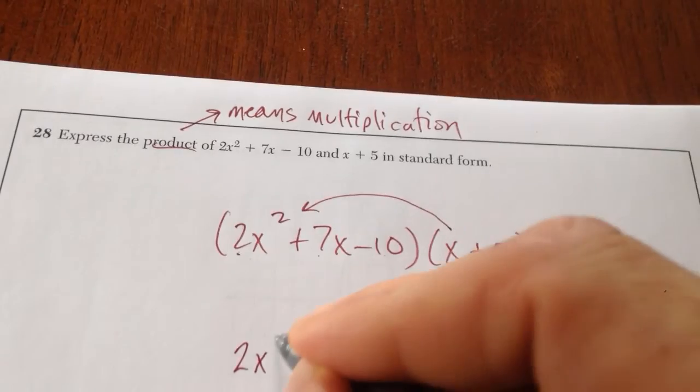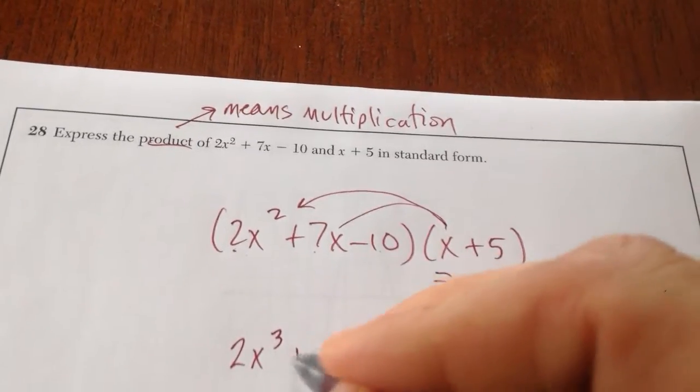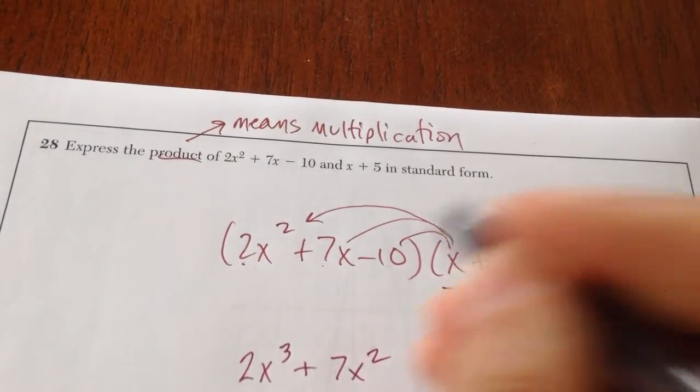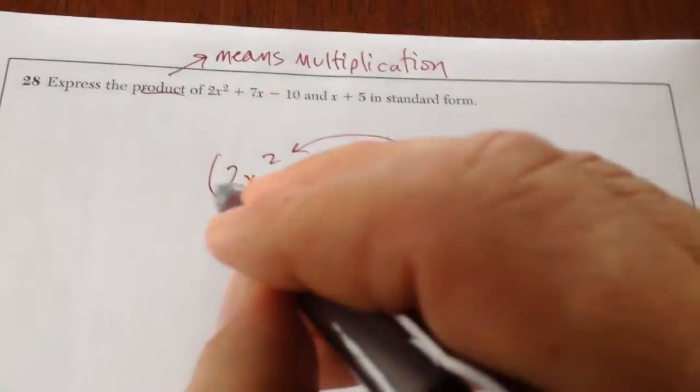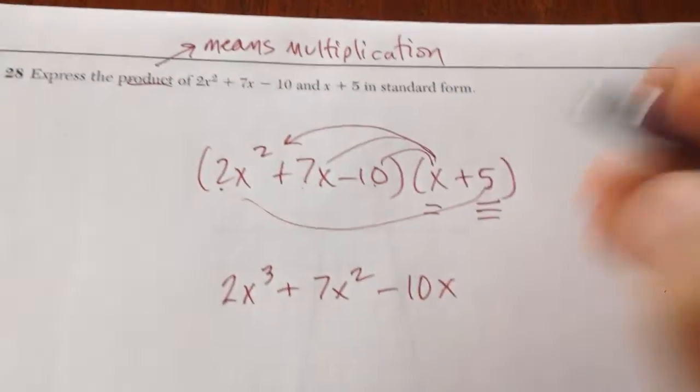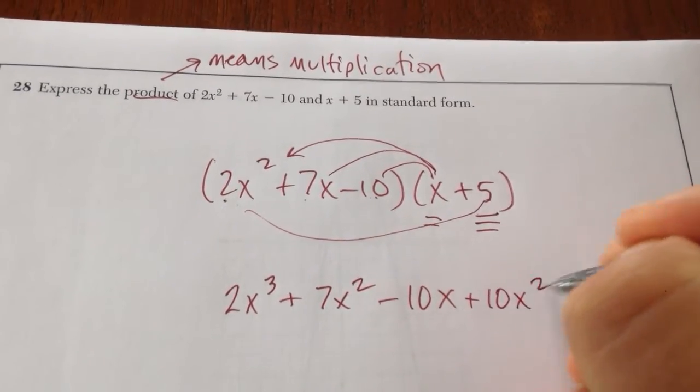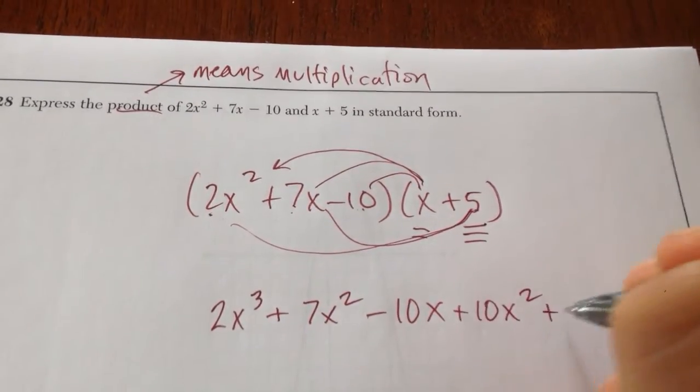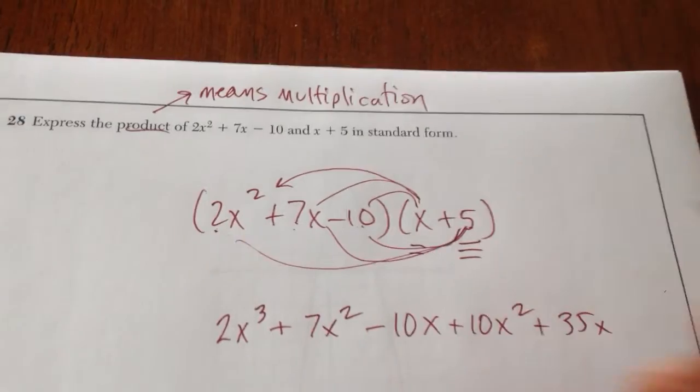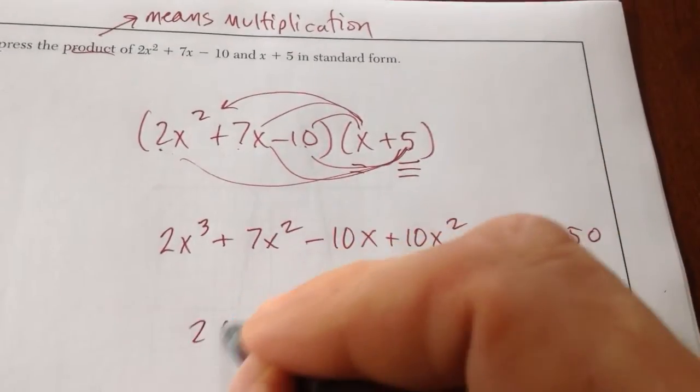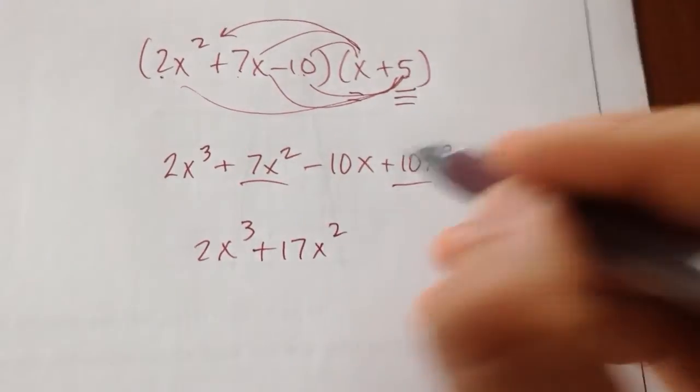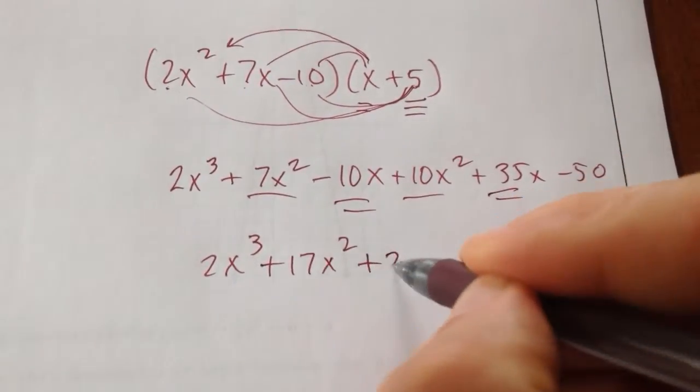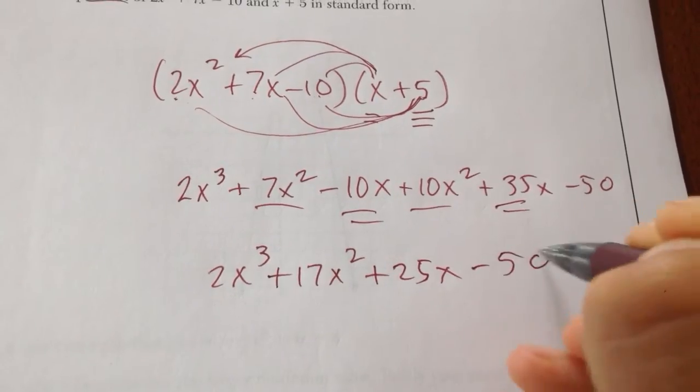2x squared times x is 2x to the third. x times 7x is going to be plus 7x squared. And then here you're going to get minus 10x. Now I have to multiply 5 times everything. 5 times here I get plus 10x squared. Here I get plus 35x. And then here I'm going to get minus 50. Now I'm going to combine like terms. 7x squared plus 10x squared, I get plus 17x squared. Minus 10x plus 35x, I get plus 25x minus 50.